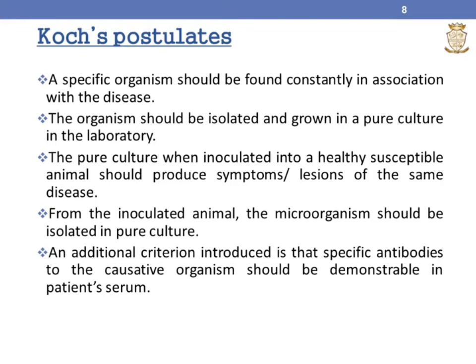There are a total of five points in Koch postulates. First, a specific organism should be found constantly in association with the disease. Second, the organism should be isolated and grown in pure culture in the laboratory. Third, the pure culture, when inoculated into a healthy susceptible animal, should produce symptoms or lesions of the same disease. Fourth, from the inoculated animal, the microorganism should be isolated in pure culture. In addition, an additional criterion introduced is that specific antibodies to the causative organism should be demonstrable in the patient's serum.